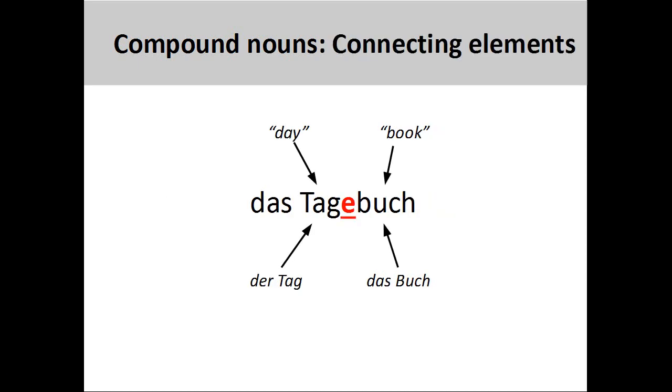Compound nouns are often joined by a connecting element. These elements are either the plural ending of the prior noun in the chain, an e, en, or n...